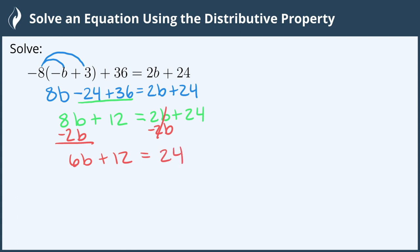To continue isolating the variable we'll need to subtract 12 from both sides. So we're left with 6b equals 24 minus 12 is 12.